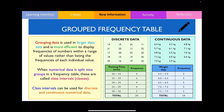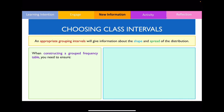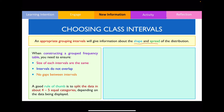Now that we know what a grouped frequency table looks like, let's talk about how to make one. It's really important to choose the correct size of our chunks so we can make comments about the shape and spread of the distribution. When constructing a grouped frequency table, we need to ensure: the size of each interval is the same, the intervals do not overlap, and there are no gaps between intervals. A good rule of thumb is to aim for four to five equal categories depending on the data.